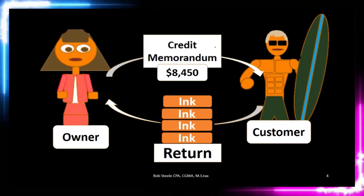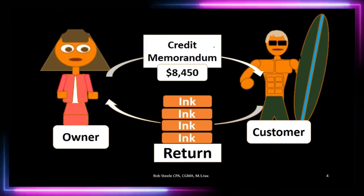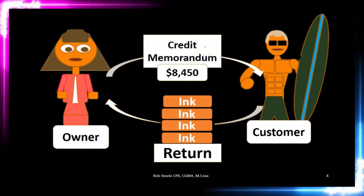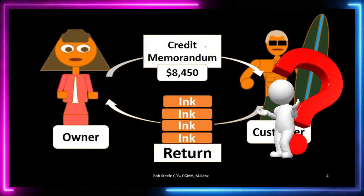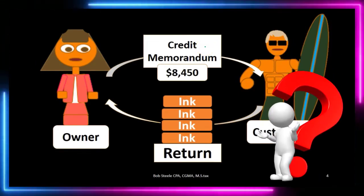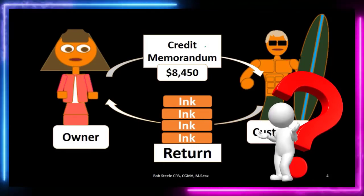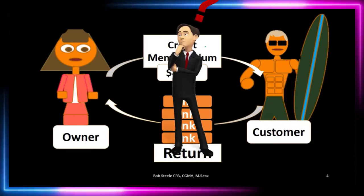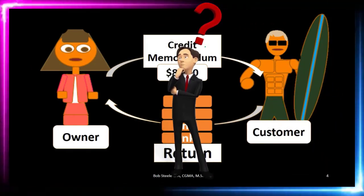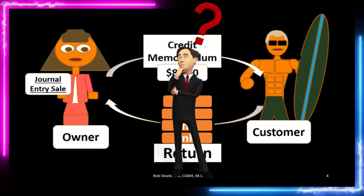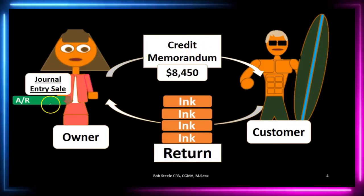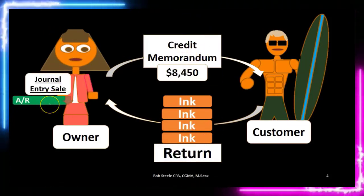Be careful with the term credit memorandum because it starts to confuse the idea of a credit. To us, a credit just means that the receivable for this particular customer has now gone down. So the journal entry would be accounts receivable decreasing — that's the credit.